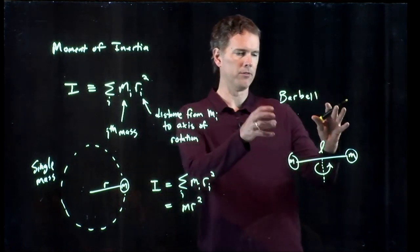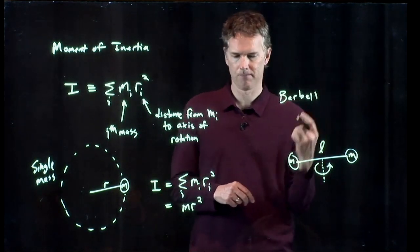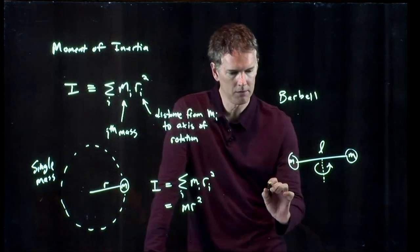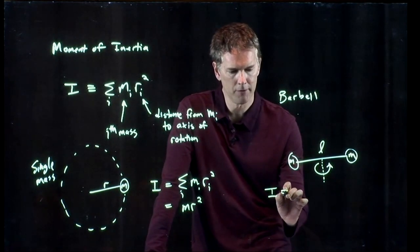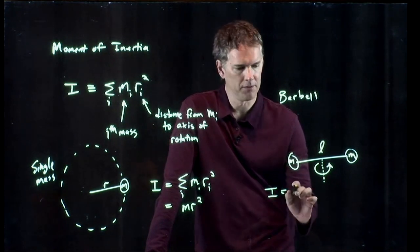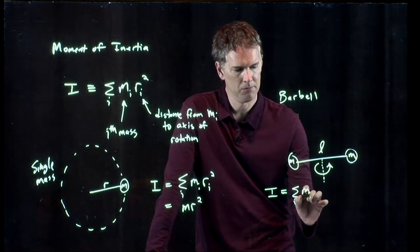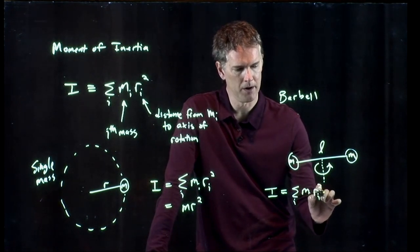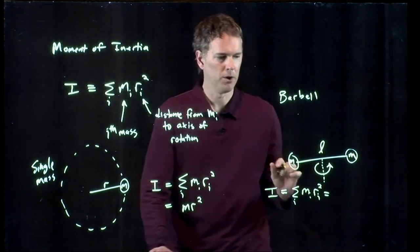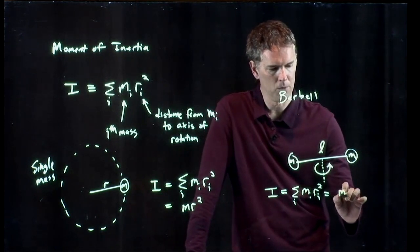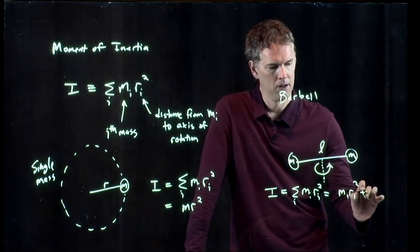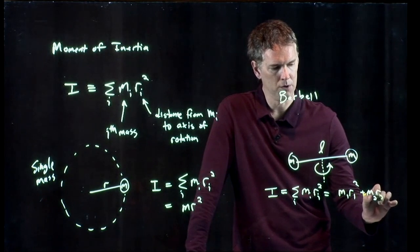Okay, so you hang a barbell from a string and you spin it around like that. What is the moment of inertia? All right, it's the summation of m sub i r sub i squared. We only have two particles here, so it's m1 r1 squared plus m2 r2 squared.